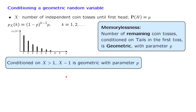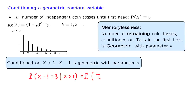Let us now give a more precise mathematical argument, first for a special case. Let us look at the conditional probabilities for the random variable X minus 1, and calculate the conditional probability that X minus 1 is equal to 3, given that X is larger than 1 — which is the same as saying that the first toss resulted in tails. This is the probability that you will need 3 more tosses until you observe heads, which is the event that you had tails in the second toss, tails in the third toss, and heads in the fourth toss, all conditioned on the first toss having resulted in tails.